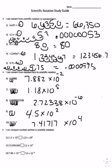Number eleven, you're comparing 1.2 times 10 to the sixth and 1.23 times 10 to the sixth. 1.23 is larger, so it's greater than. Number twelve, 32,000,000 and 3.2 times 10 to the seventh are equal.